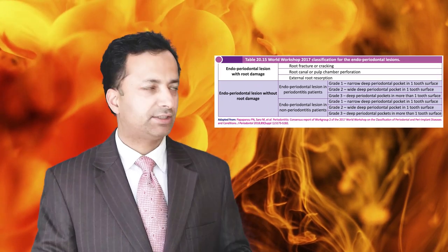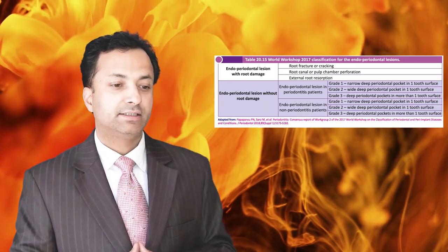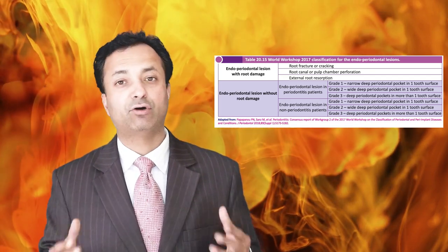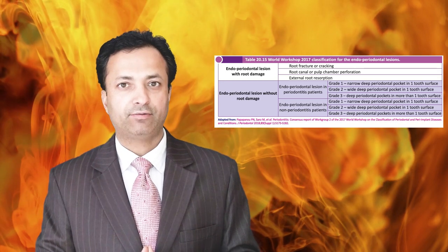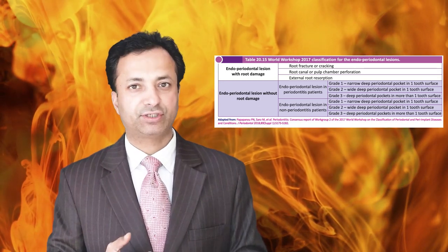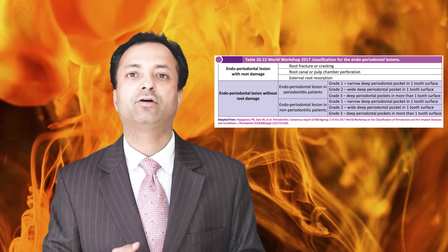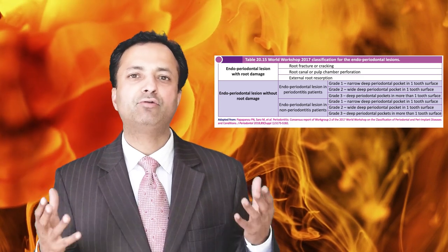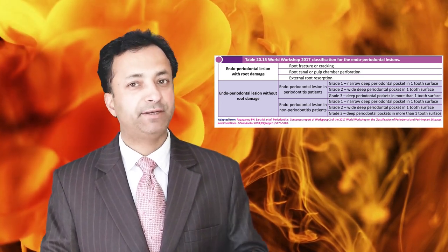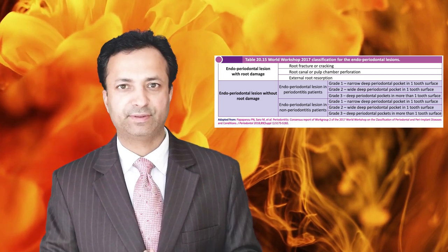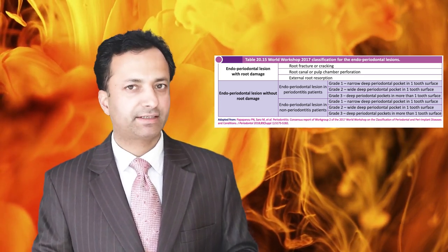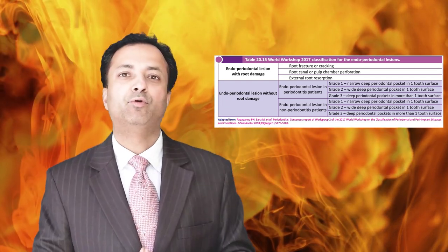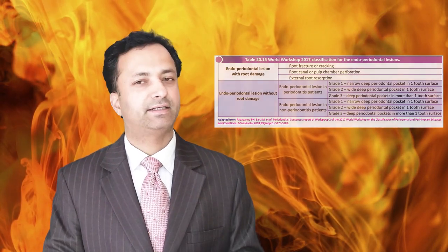For endodontic periodontal lesions, two situations are described: lesions occurring because of root damage — due to fracture, perforation of the root canal, or external root resorption — and lesions occurring without root damage, which may occur in periodontitis or non-periodontitis patients. Both situations are categorized as Grade 1, Grade 2, and Grade 3, and should be described by their grade.